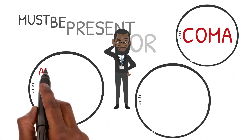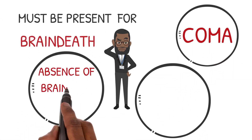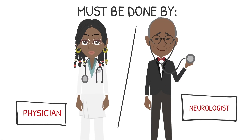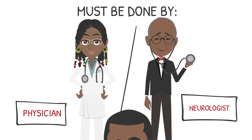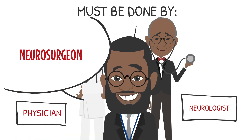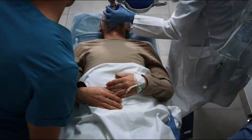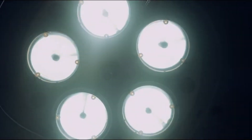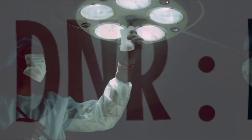Three essential findings in brain death are coma, absence of brainstem reflexes, and apnea. This must be completed by a primary physician and a second confirming neurologist or neurosurgeon. It's important to note that classification of brain death is necessary if a patient is going to be an organ or tissue donor.